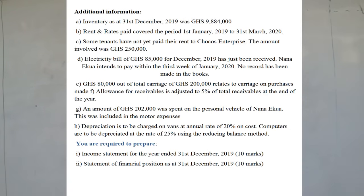The first additional information is inventory as at 31st December 2019, which was 9,884,000 — that is the closing inventory. Everything in the additional information is supposed to be treated twice. The first treatment is that it will be subtracted from the cost of goods available for sale in the income statement. The second treatment is that it will be taken to the statement of financial position as a current asset.